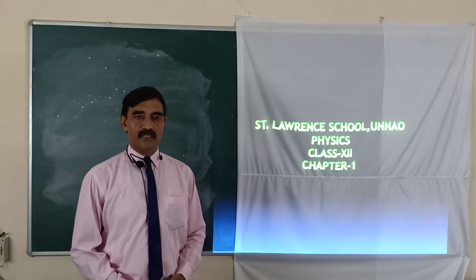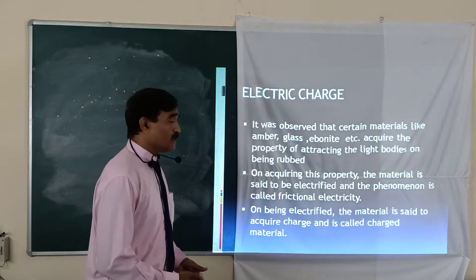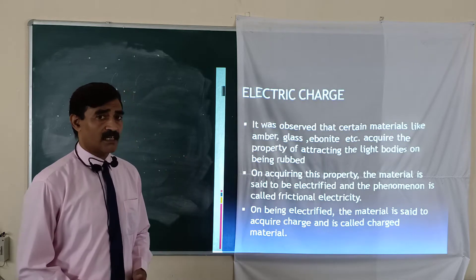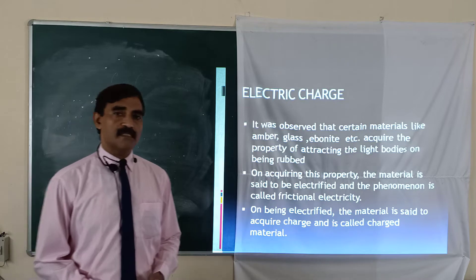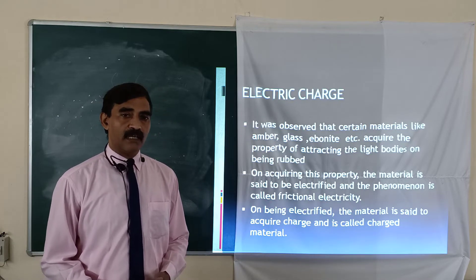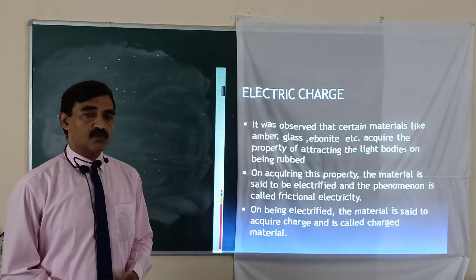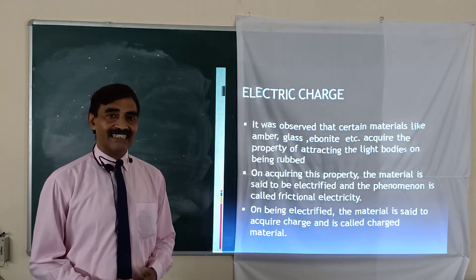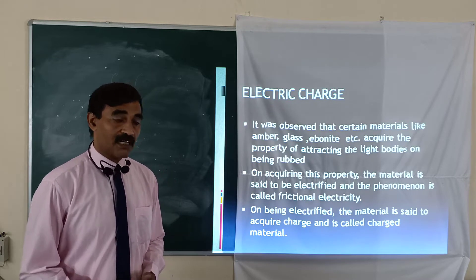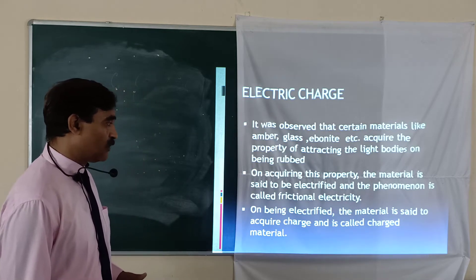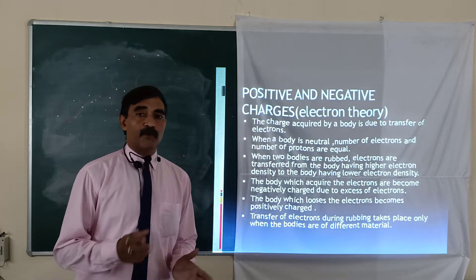Good morning students. We are going to start Chapter 1, Physics, Class 12. This chapter consists of electric charge. It was observed that certain materials like amber, ebonite, and glass acquire the property of attracting other bodies when rubbed with other bodies. This process is known as frictional electricity, and the body becomes a charged body. The charge acquired by the body is of two kinds: positive and negative charge.